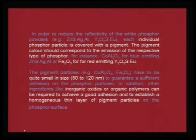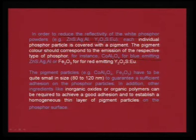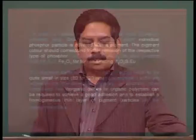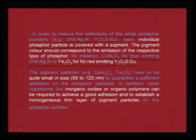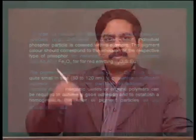To reduce the reflectivity of white phosphor powders, each phosphor particle is covered with a pigment. For example, cobalt aluminate is a good pigment for blue-emitting zinc sulphide doped with silver and aluminium. Similarly, alpha iron oxide powder is used to control the reflectivity for red-emitting compounds.